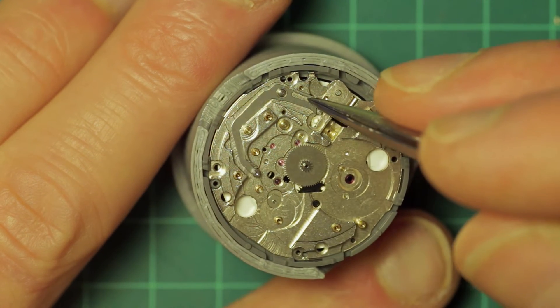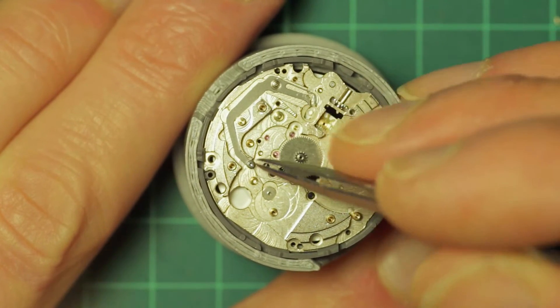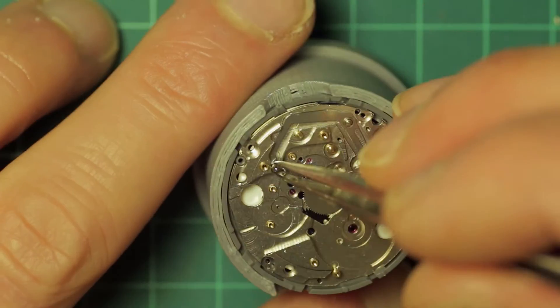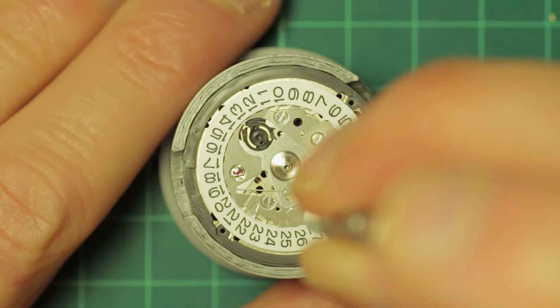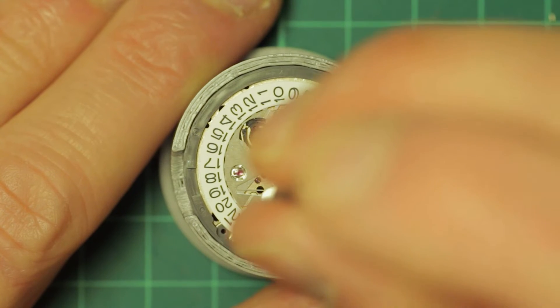And this leaves the hack or balance stop in place. And you can see how that operates on its pivot and swings in to press against the balance rim and stop the balance. Moving on to the dial side.